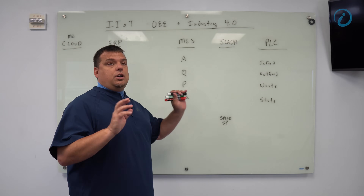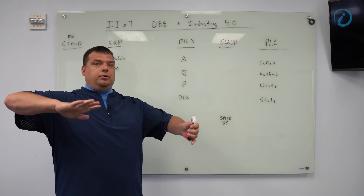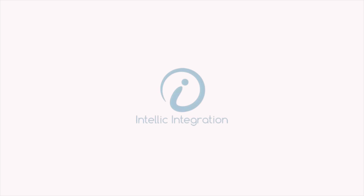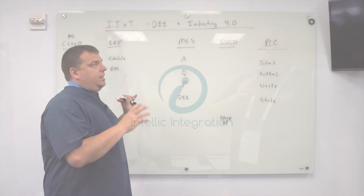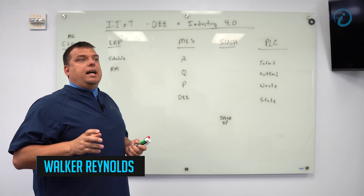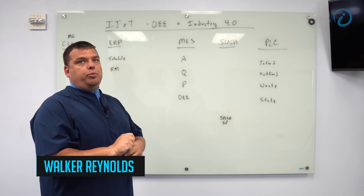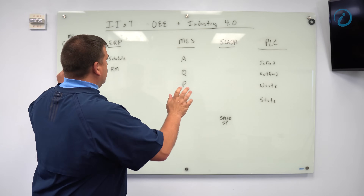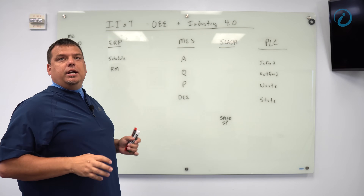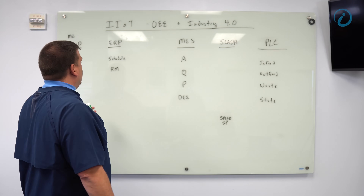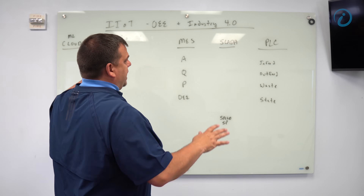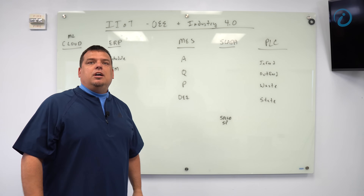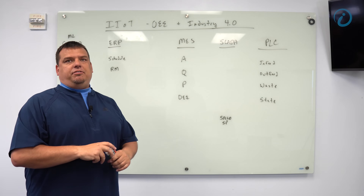This is IIoT, this is OEE and Industry 4.0. Here's an example of why IIoT and leveraging Industry 4.0 principles matters. What I have on the board is an Industry 3.0 example — ignore the machine learning cloud for a second — of a traditional manufacturing environment.